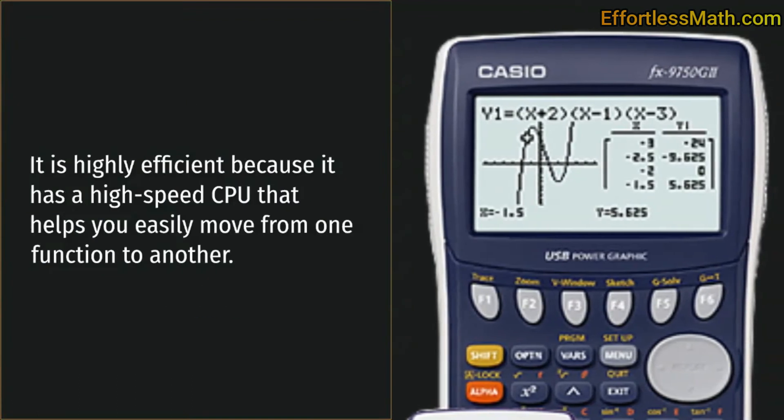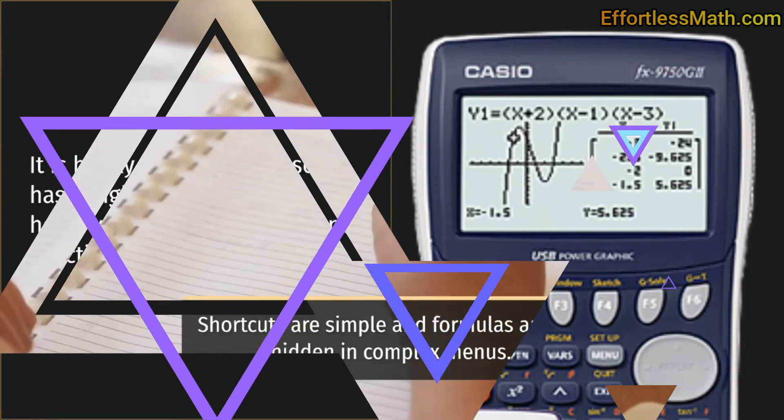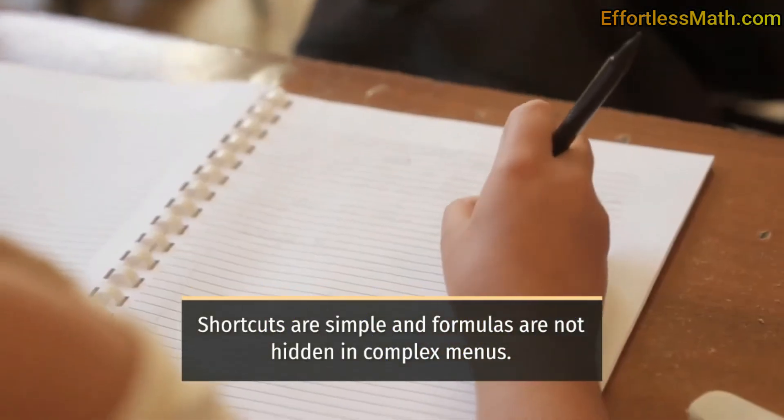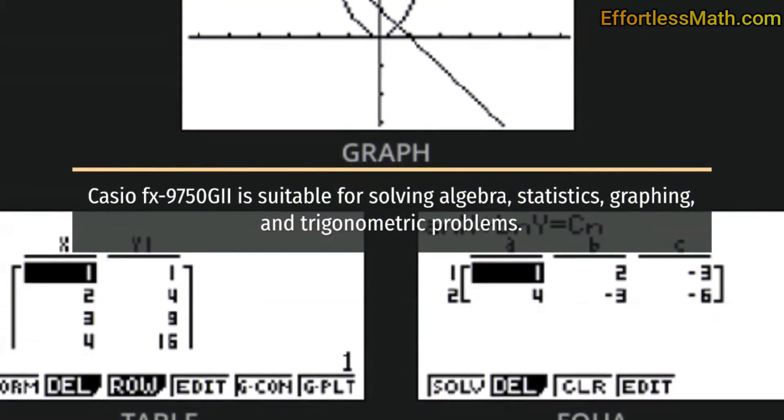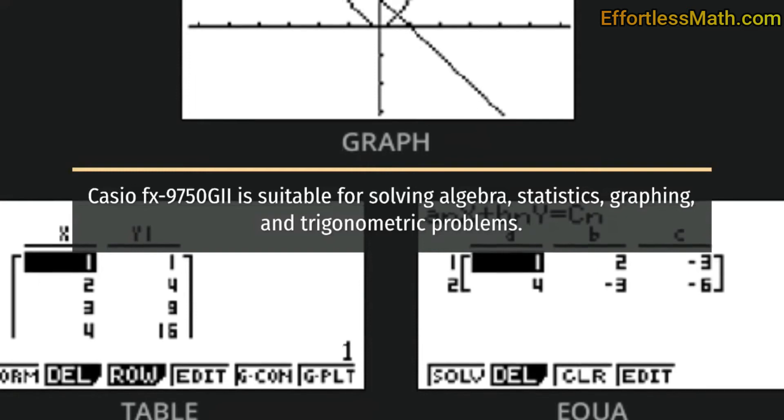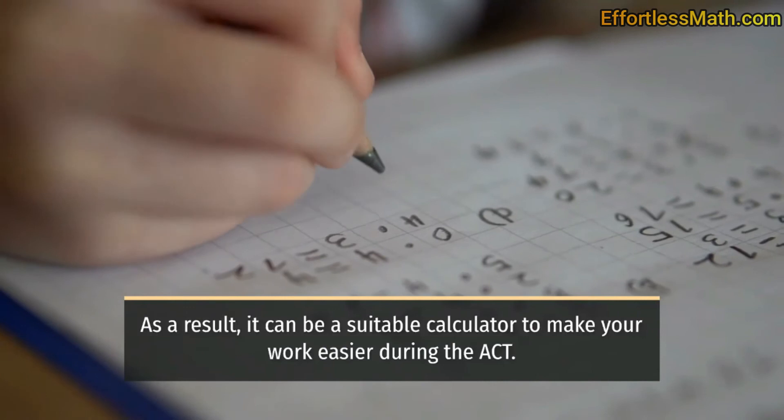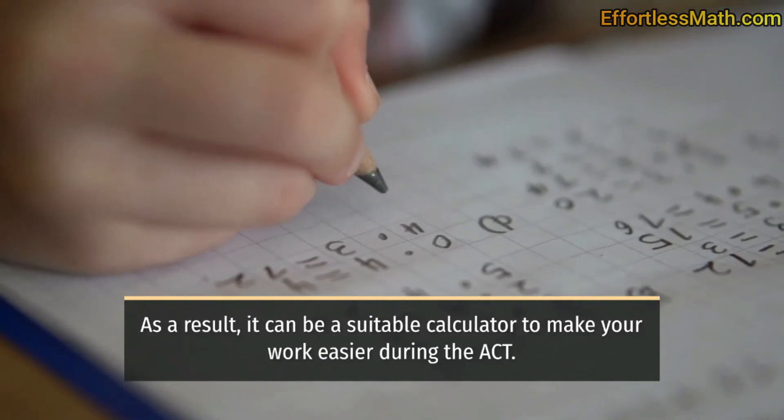This device has a high resolution LCD screen. It is highly efficient because it has a high speed CPU that helps you easily move from one function to another. Shortcuts are simple and formulas are not hidden in complex menus. Casio FX-9750G2 is suitable for solving algebra, statistics, graphing, and trigonometric problems. As a result, it can be a suitable calculator to make your work easier during the ACT.